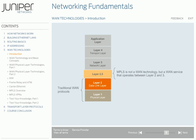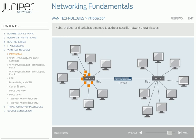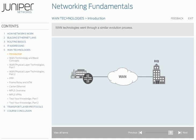MPLS operates between layer 2 and layer 3, and some refer to MPLS as a layer 2.5 protocol. Just as different Ethernet network devices, such as hubs, bridges, and switches, emerged to address specific network growth issues, WAN technologies also went through a similar evolution process. To explain these different WAN technologies, we'll revisit Acme Company and see how its growth required each different technology.